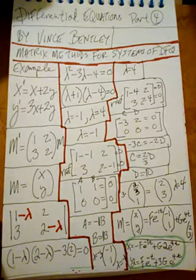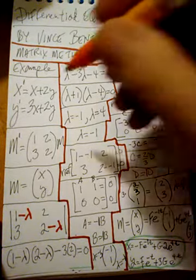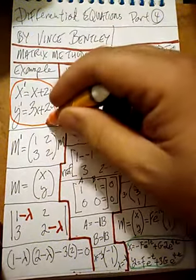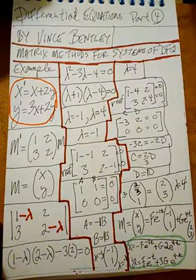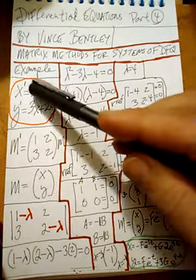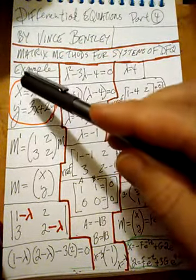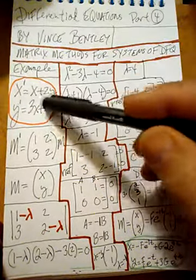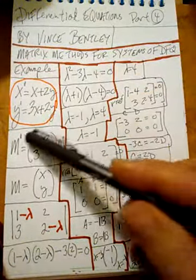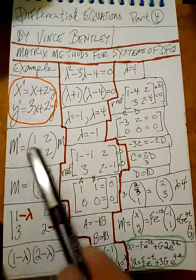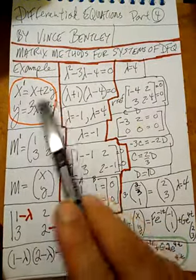Somebody hands us a differential equation that looks like this. The first thing we'll do is rewrite each of the coefficients in a matrix. And M prime here — M will equal x, y.